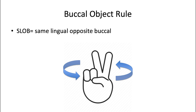This is the buccal object rule. As you move the x-ray tube head in one direction, the object that's further away from the tube head — that's more lingual — will move in the same direction as the tube head. In other words, the lingual object moves in the same direction, the buccal object moves in the opposite direction. Let's see how that plays out in a real-life clinical example.